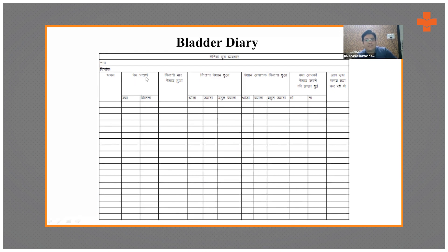In the bladder diary, the patient records: the time, what and how much they drank, how much fluid in ml and what type, how many times they urinated, how much urine was passed (very little, little, or a lot), any episodes of sudden unintended urination, whether there was an urge to urinate, and what they were doing at the time — for example, watching TV or talking to someone. This helps plan interventions if the patient is socially embarrassed by incontinence.